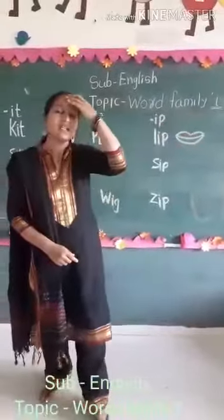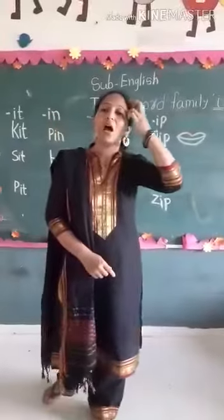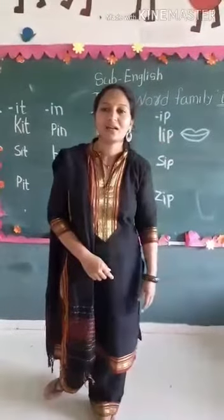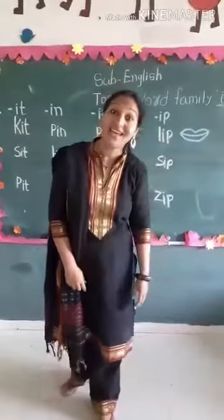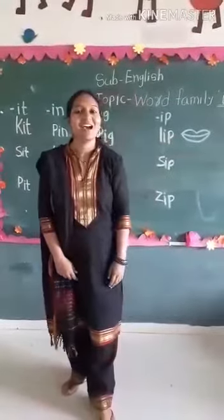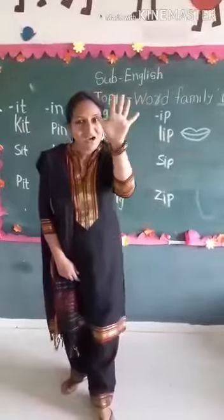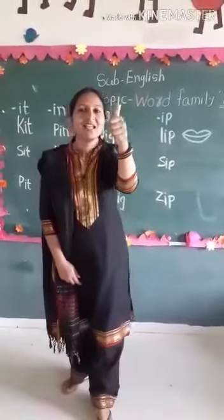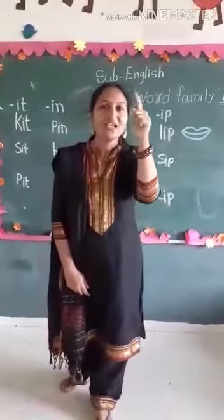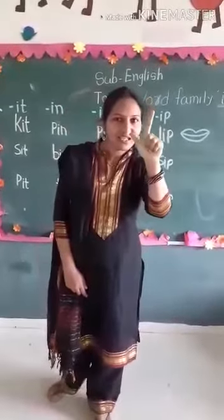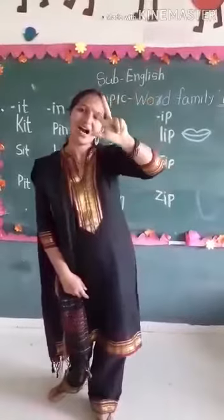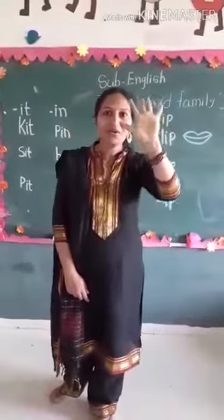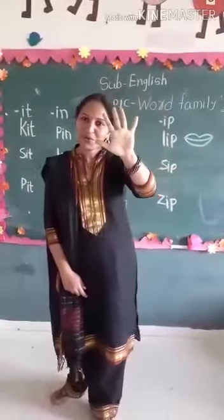So, first of all, tell me how many vowels there are? There are five vowels: A, E, I, O, U.